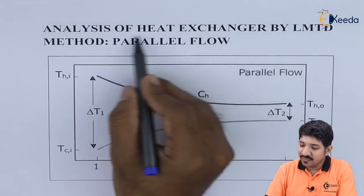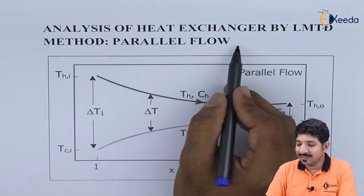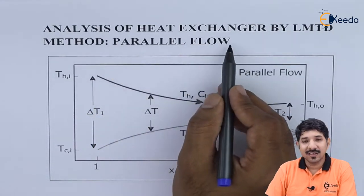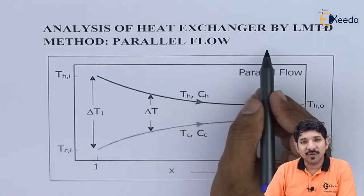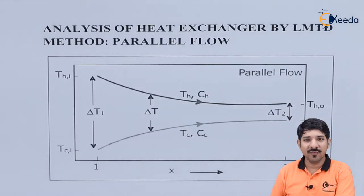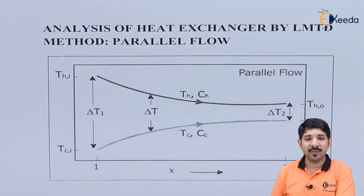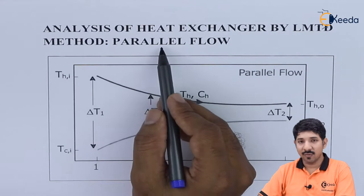For parallel flow — as we have seen in the classification of heat exchangers — there are three types based on flow: parallel flow, counter flow, and cross flow. The LMTD analysis is quite well known for parallel flow and counter flow. Here, let us look at the parallel flow.